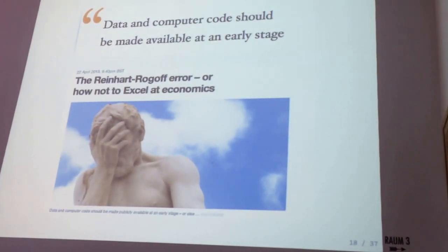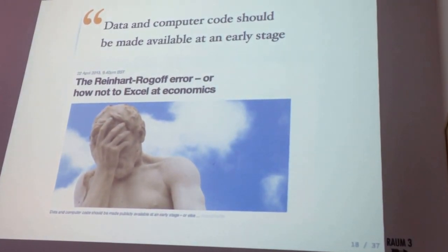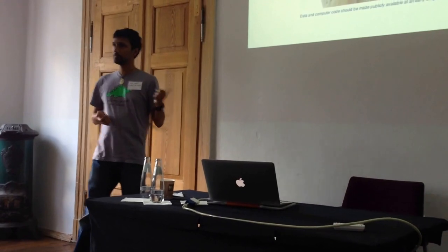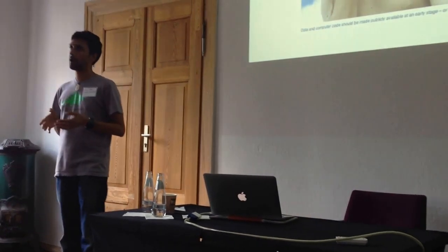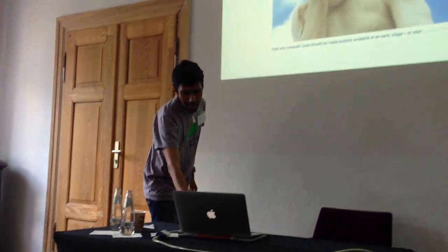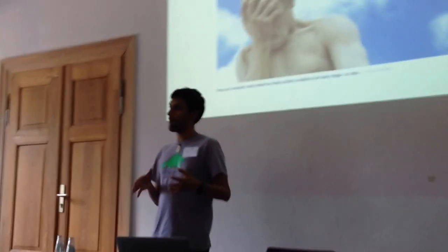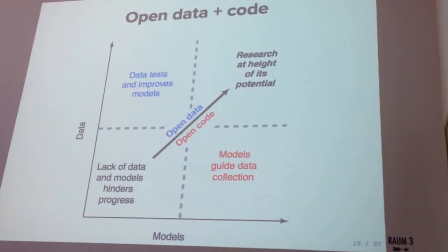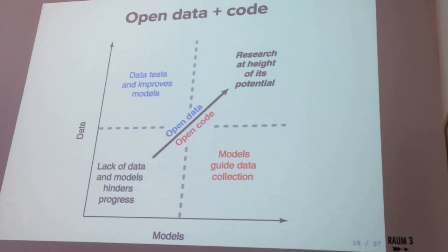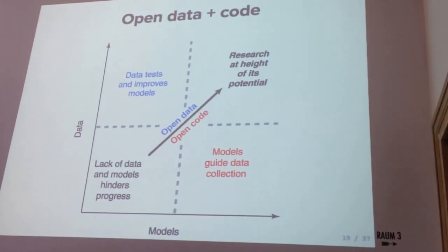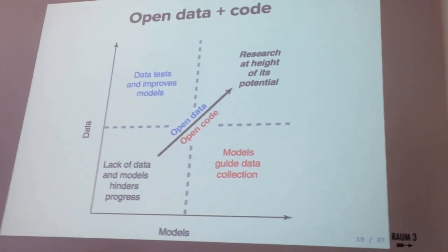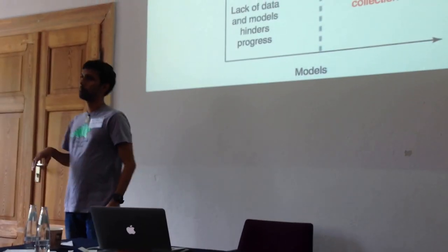Christopher talked about Reinhart-Rogoff this morning — it's a very silly case where an Excel error led to an issue discovered two years after publication. If you share data and code, it's very likely somebody will spot an issue fairly early on. But catching mistakes early is really not the primary motivation — it's really to do better science. If you are a statistical modeler, it's good for us to keep your data to build better models. And as someone that collects their own data, having better models helps decide what kind of data to collect. We're trying to push people into that collaborative, open-data quadrant.